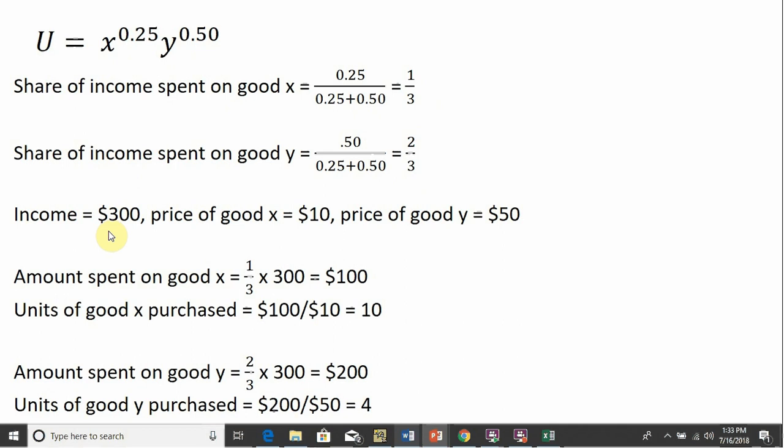If the consumer has $300 of income, price of good x is $10, price of good y is $50, the amount spent on good x will be one-third times $300 or $100. So the consumer will spend $100 on good x. Since good x costs $10 a piece, the consumer can afford 10 units.